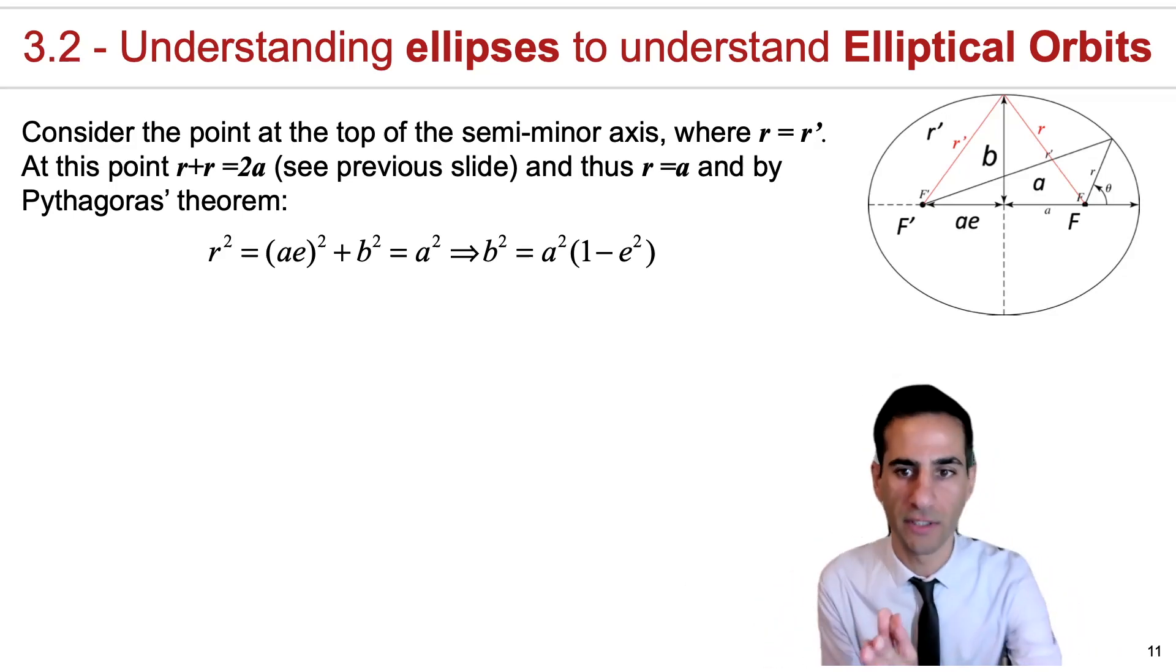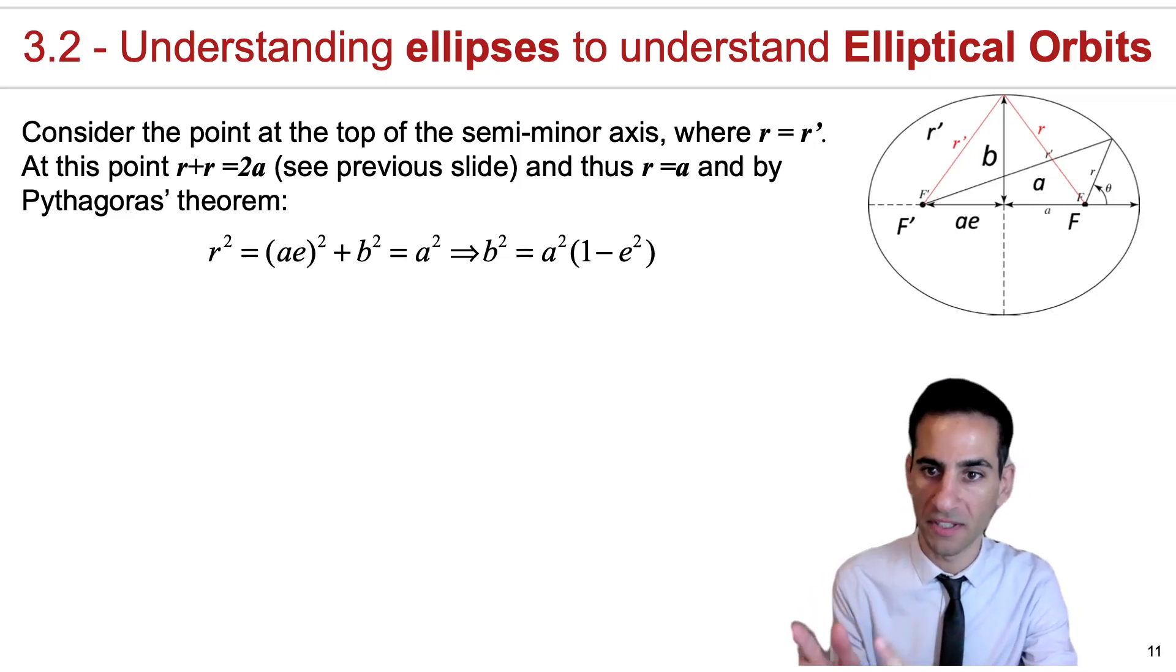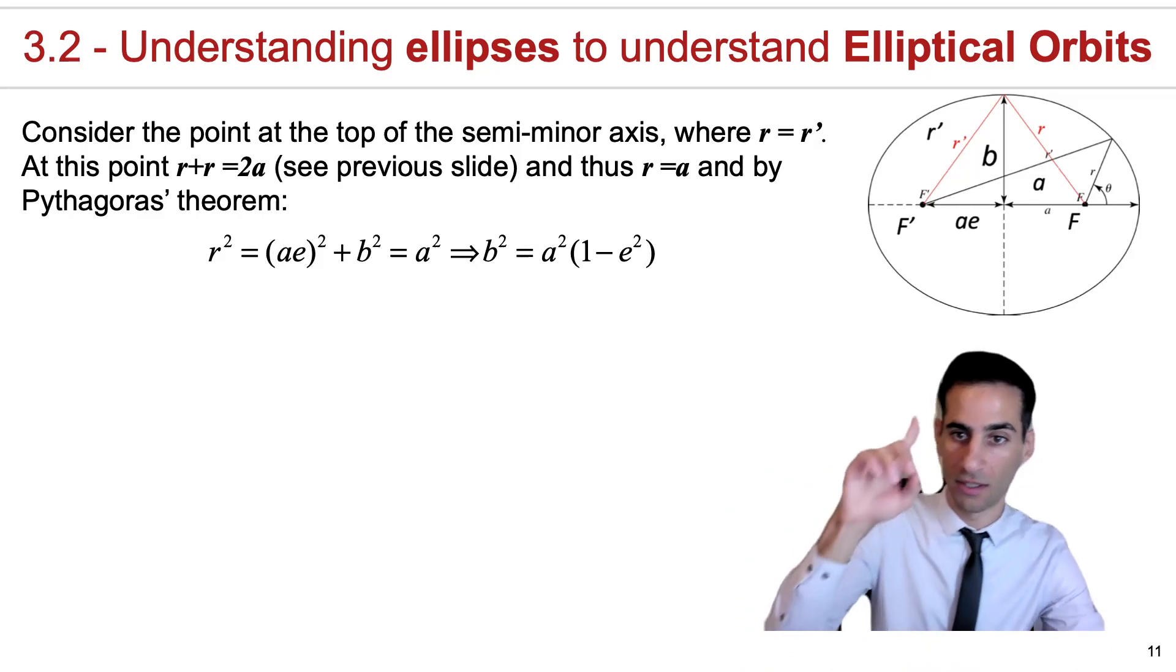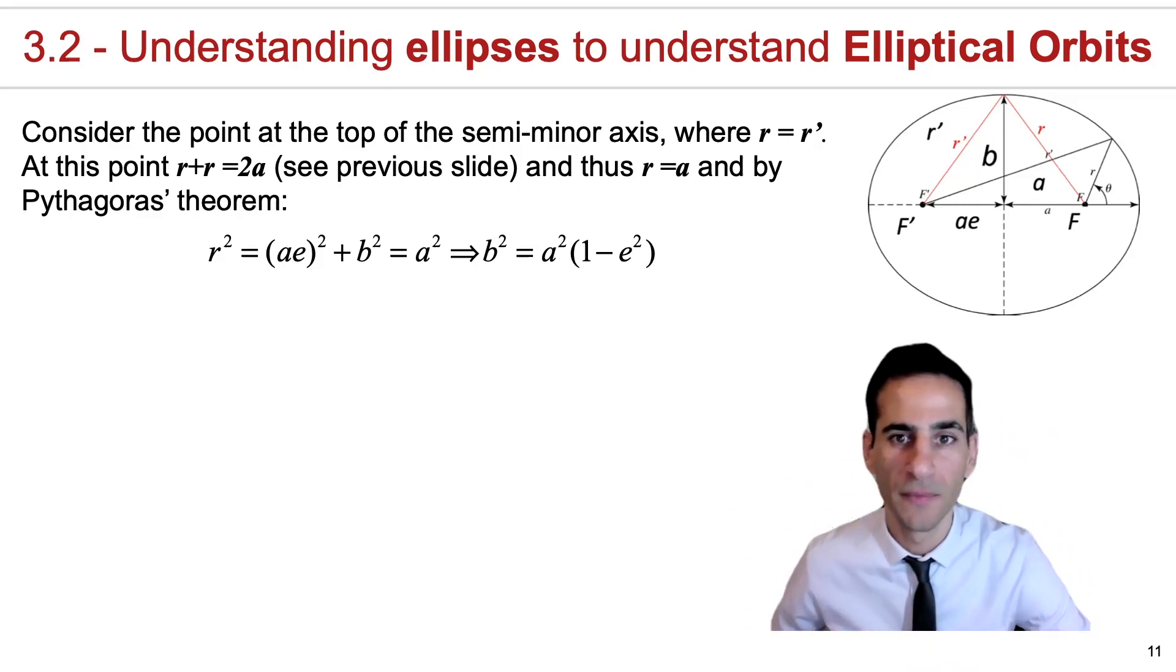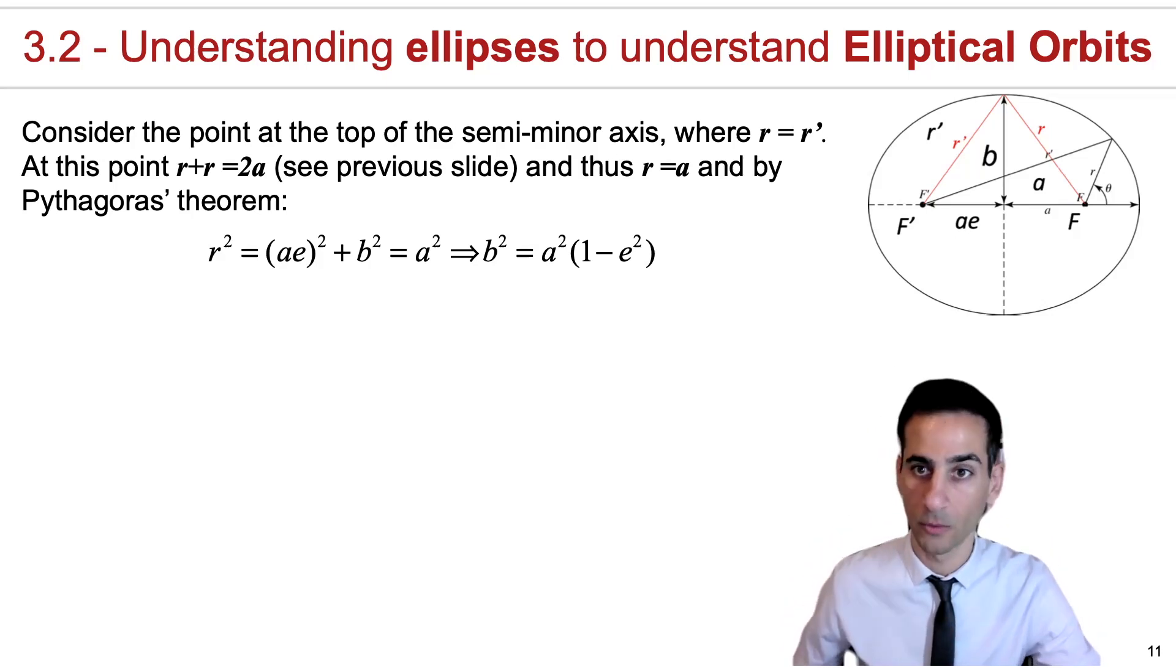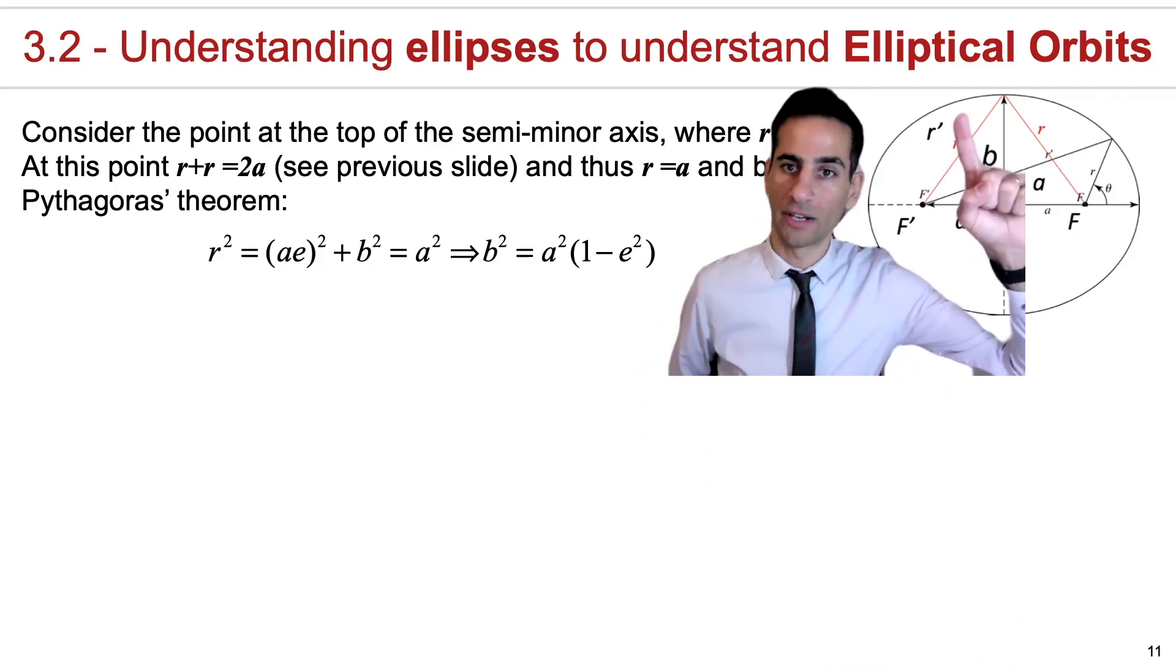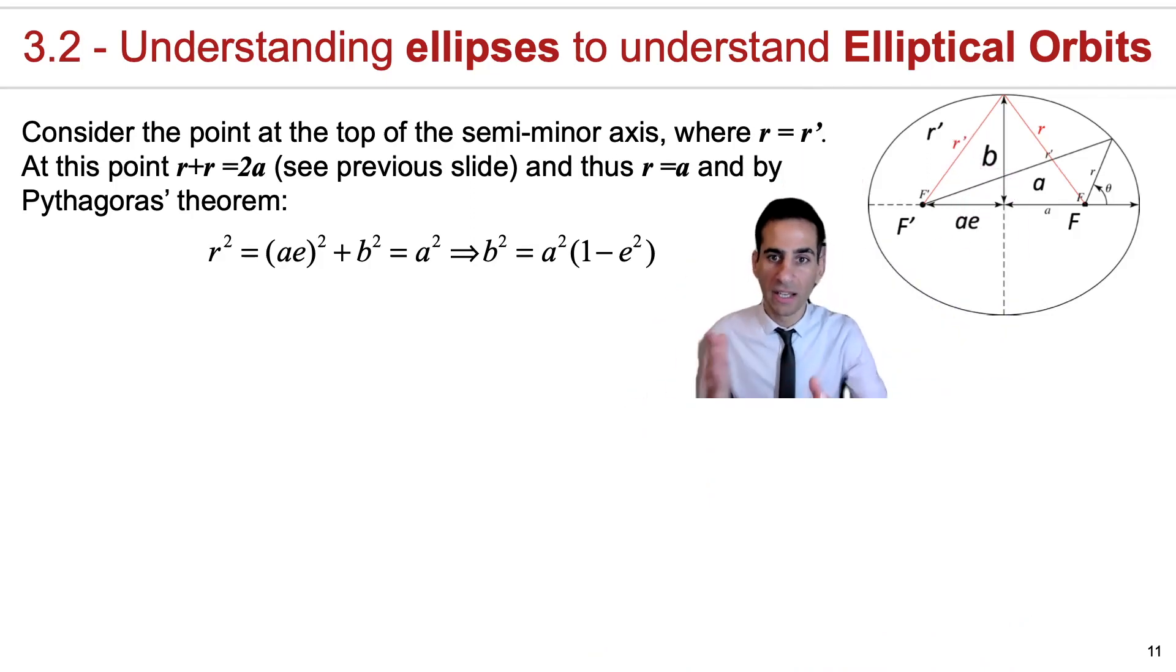Now let's come back to the important condition. We saw that r prime plus r must equal 2a to describe a point in the ellipse, as you see right here. The advantage of this is that there is a specific special point where r prime equals r.